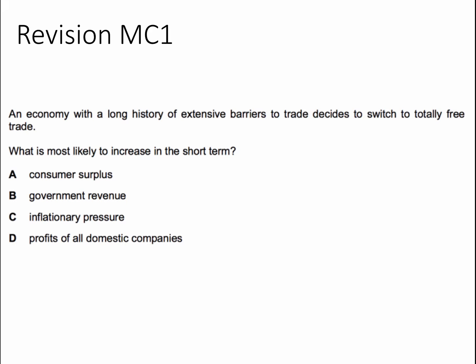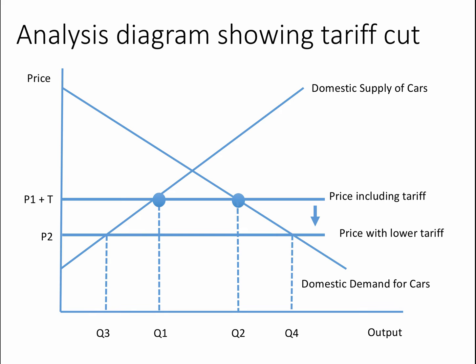The answer to question one is A — consumer surplus. If we eliminate import tariffs or import quotas, in theory prices in markets will come down, and that should increase consumer surplus. The government will get less tax revenue if the tariff disappears. Lower prices reduce inflationary pressure, and open trade tends to cut the profits of domestic companies. Here's a quick analysis diagram to remind us of a tariff cut — if we cut the import tariff on cars, for example, the price of cars would fall if other countries can supply cars at cheaper prices. That's a good example of an analysis diagram to draw.